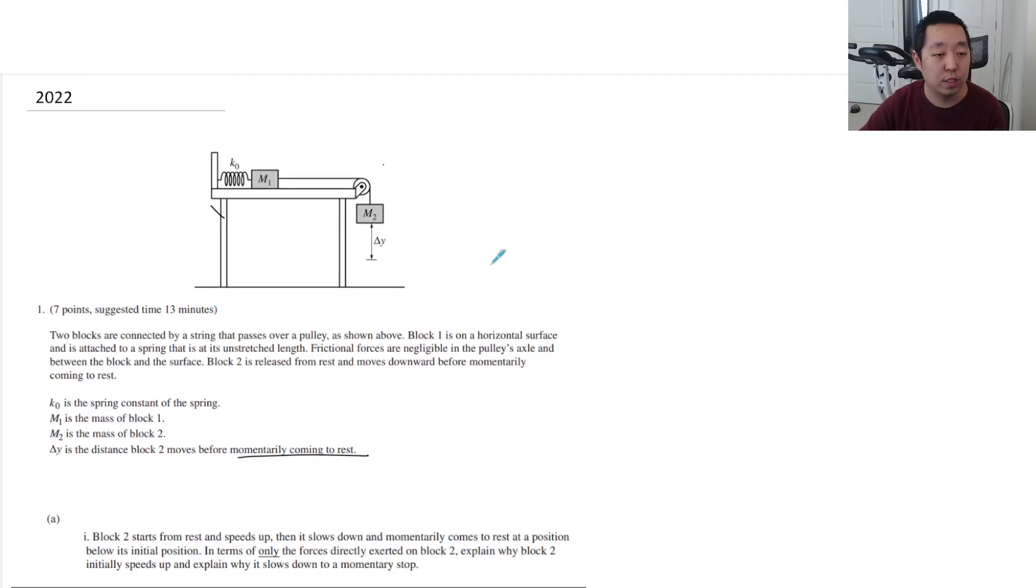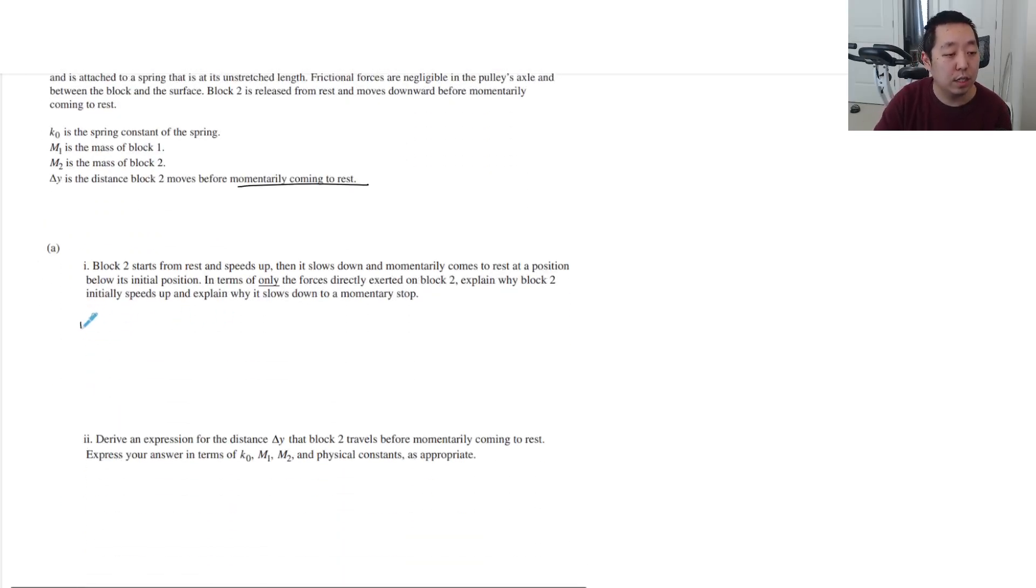So if I look at the net force, initially it goes down because the gravitational force is bigger than the tension. So initially, and they only want the forces on block two, initially M2G is greater than tension, therefore it accelerates downward.